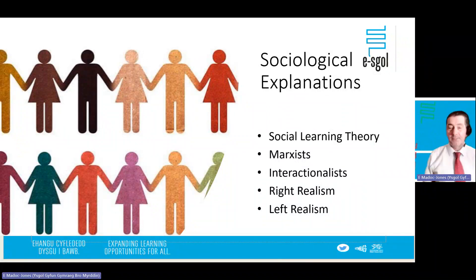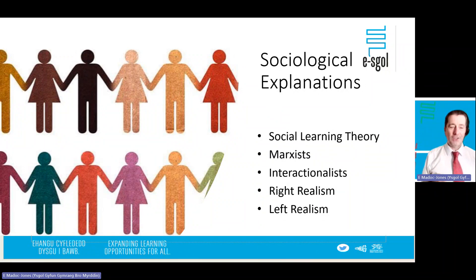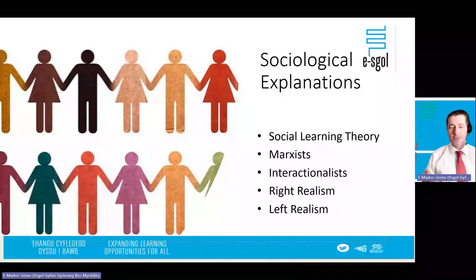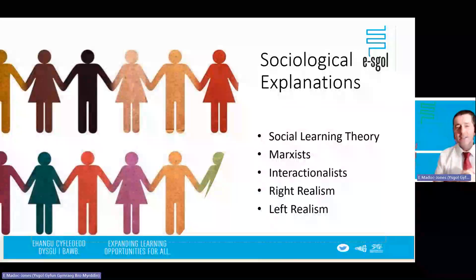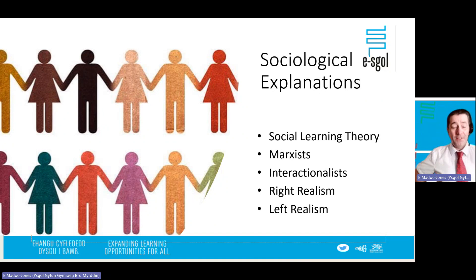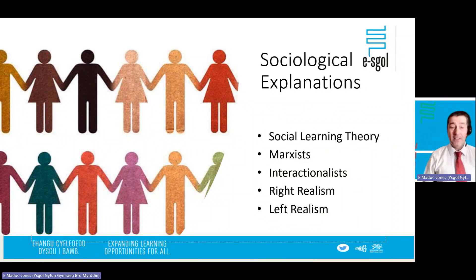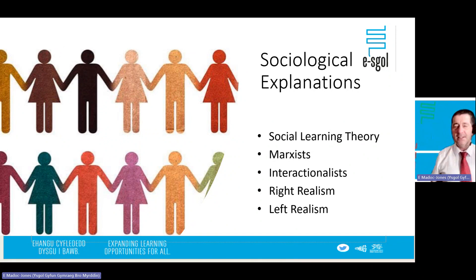Marxists would argue that the law is against poorer people and the police are policing the poor. This is an unequal, criminogenic society which encourages law-breaking, because people are treated unequally. The bourgeoisie own all the property and money, while the proletariat face massive wealth inequality. Marxists believe that the state's oppressive apparatus — police and courts — means that inequality equals crime equals reoffending, unless the entire system is turned on its head.